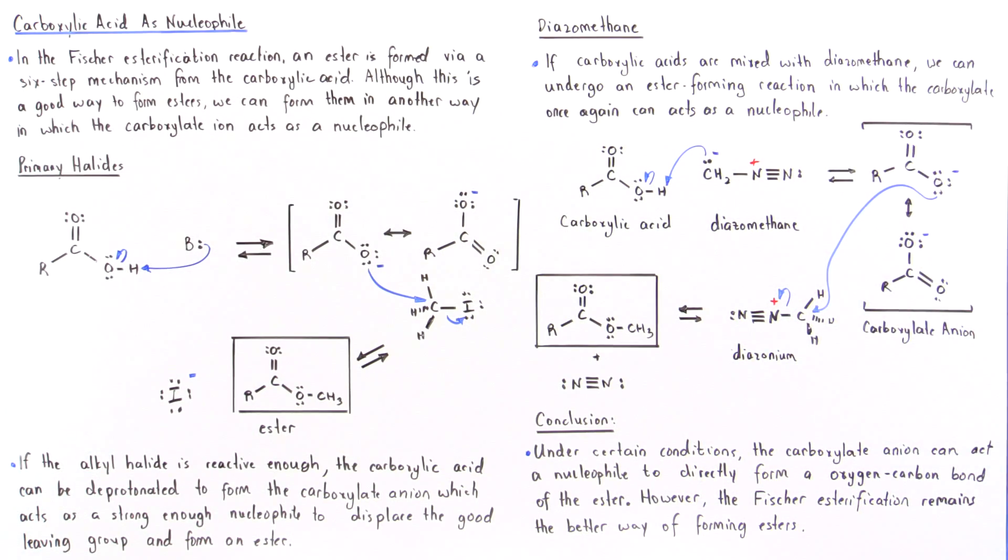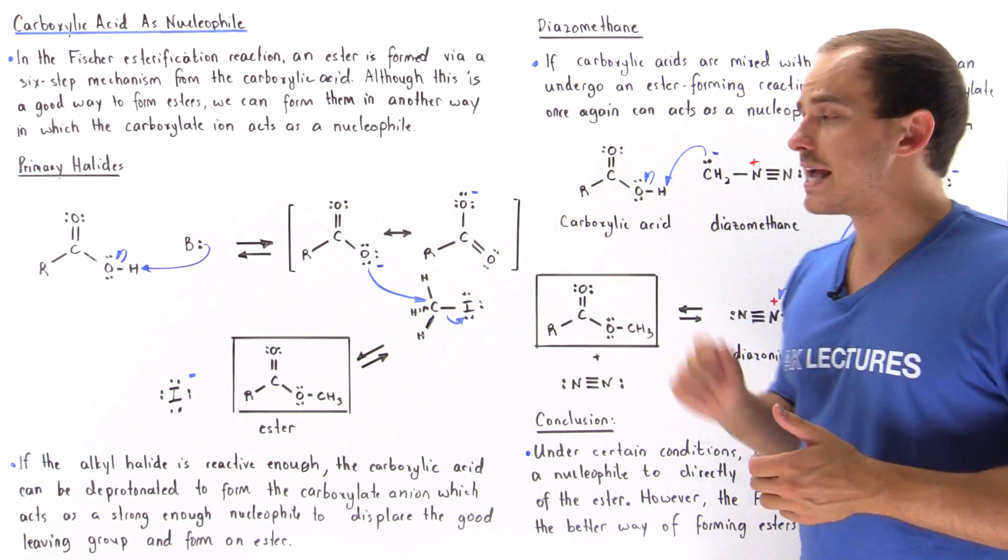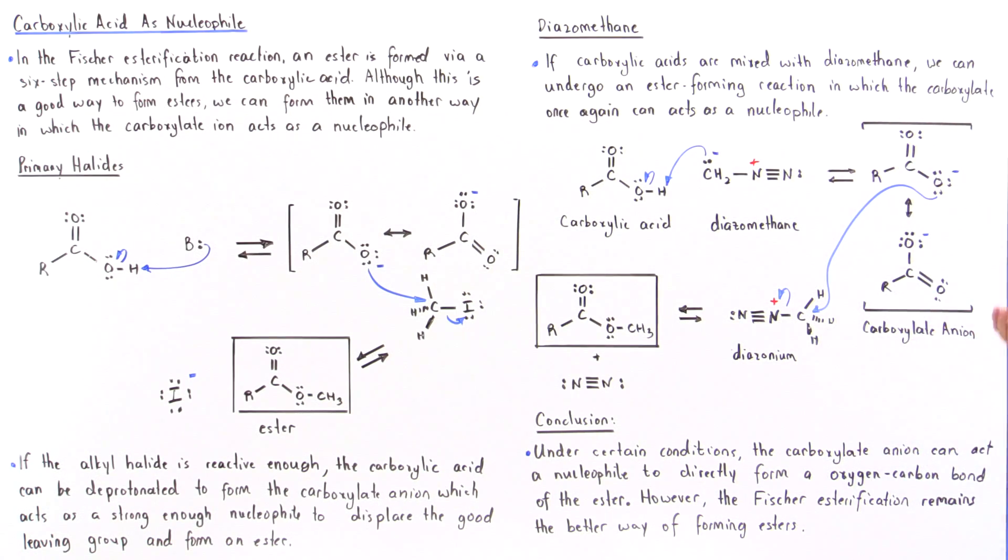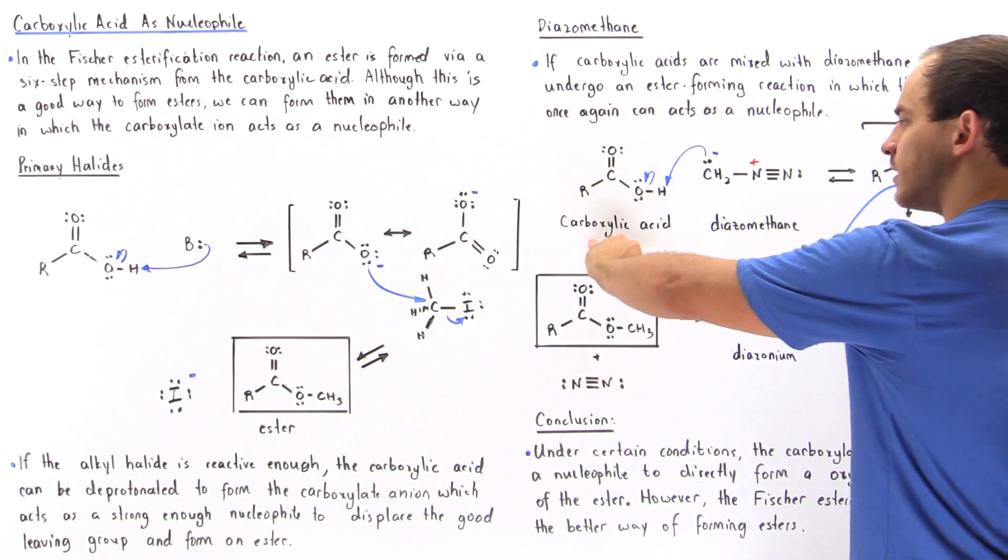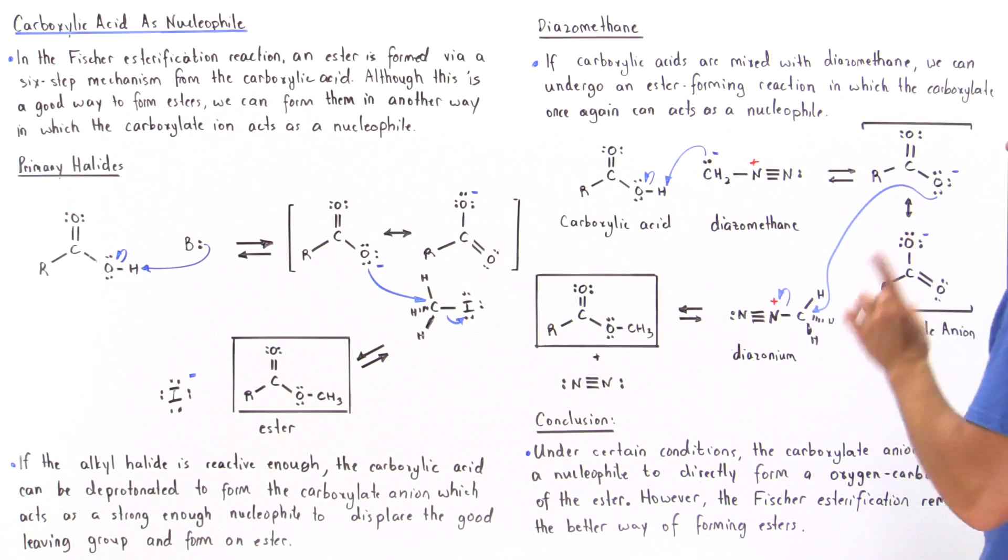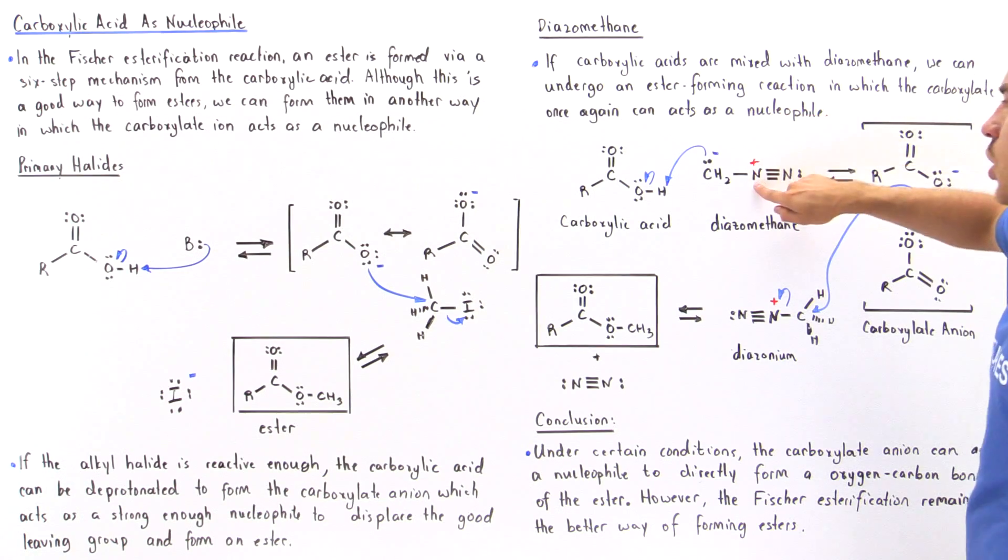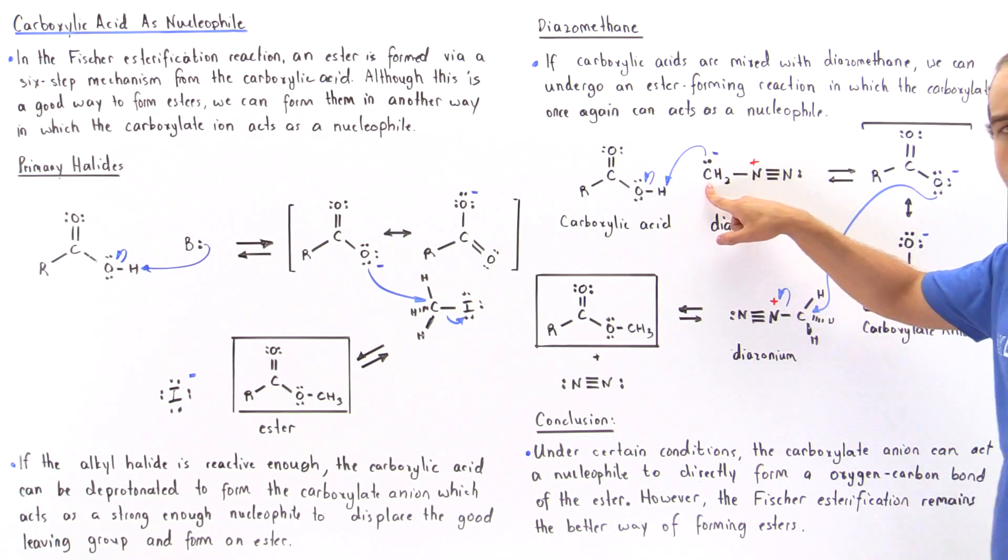This carboxylate ion, as shown here, acts as a nucleophile to form an ester product. So let's suppose we take the carboxylic acid and mix it with our diazomethane, which looks something like this. We have a positive charge on the middle nitrogen and a negative charge on this carbon.